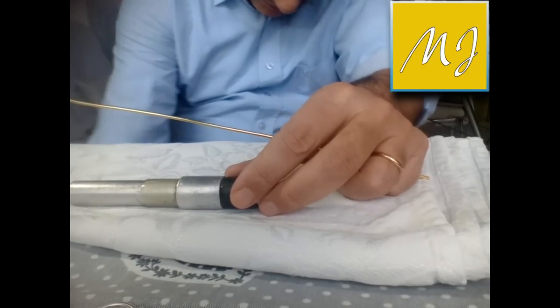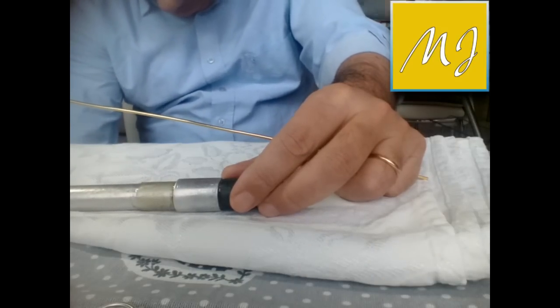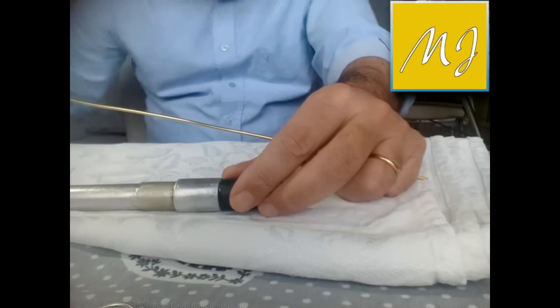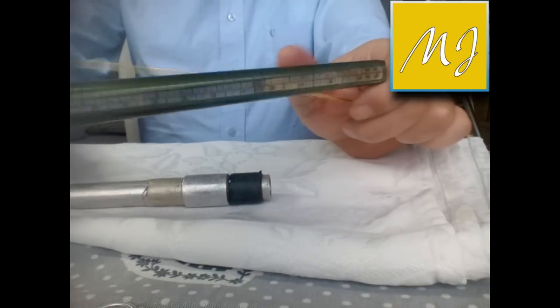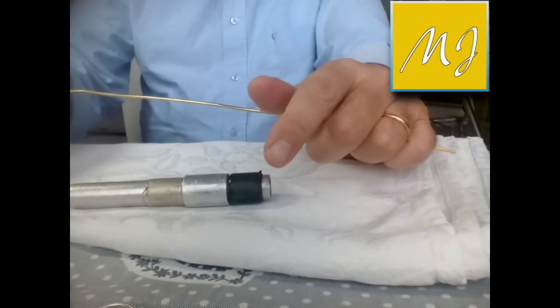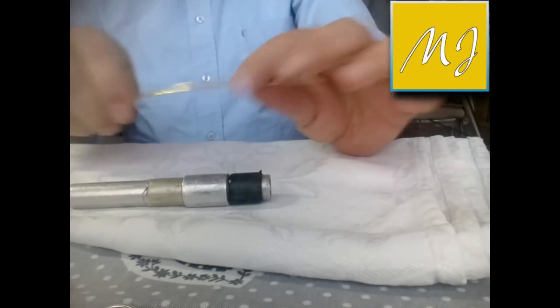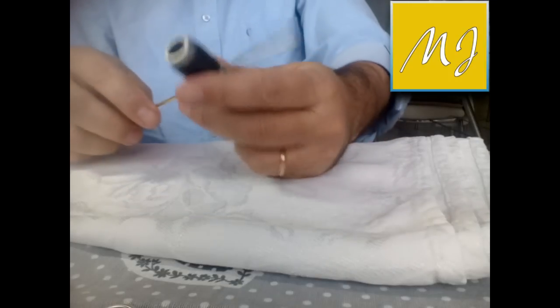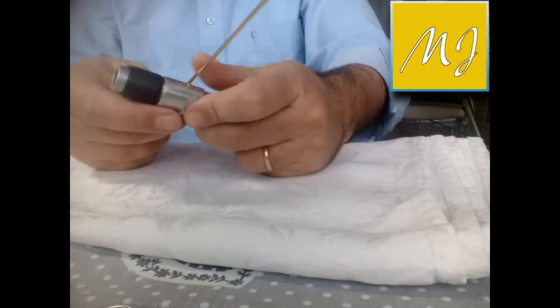Voi potete usare qualsiasi cosa, basta che sia del diametro occorrente del vostro dito. Ecco, poi arrotoliamo intorno al tubo il filo.